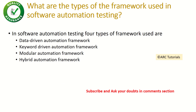The next question is: what are the types of frameworks used in software automation testing? Four types of frameworks are used: data-driven automation framework, keyword-driven automation framework, modular automation framework, and hybrid automation framework. These will be covered in detail later, but remember these are the four high-level frameworks used in automation testing.